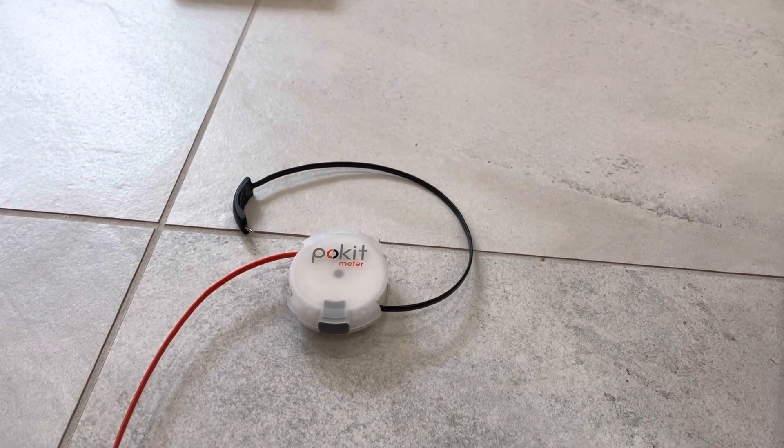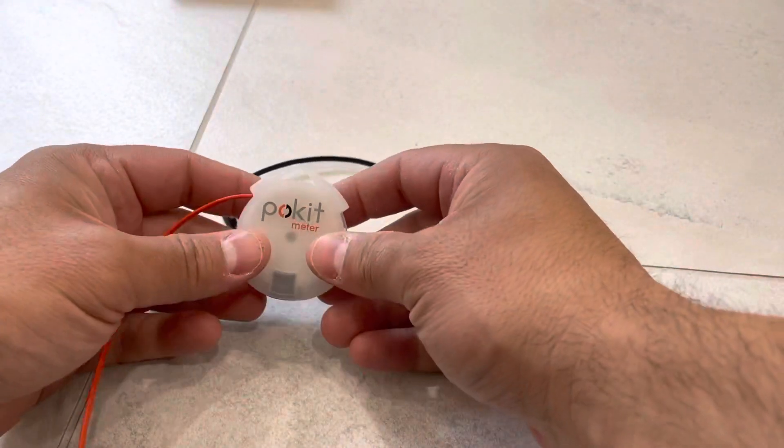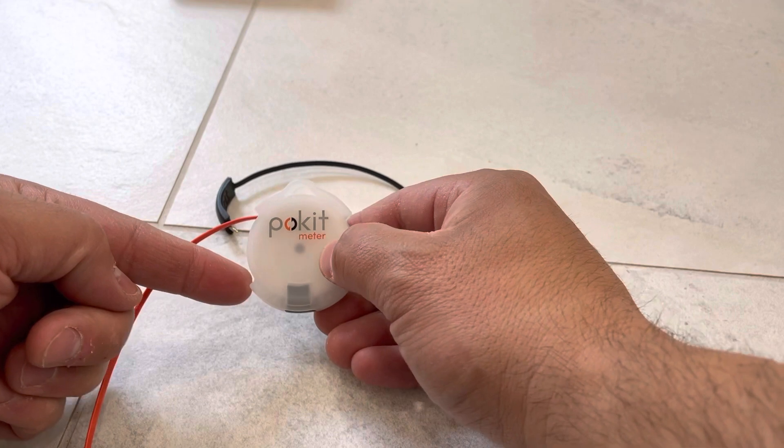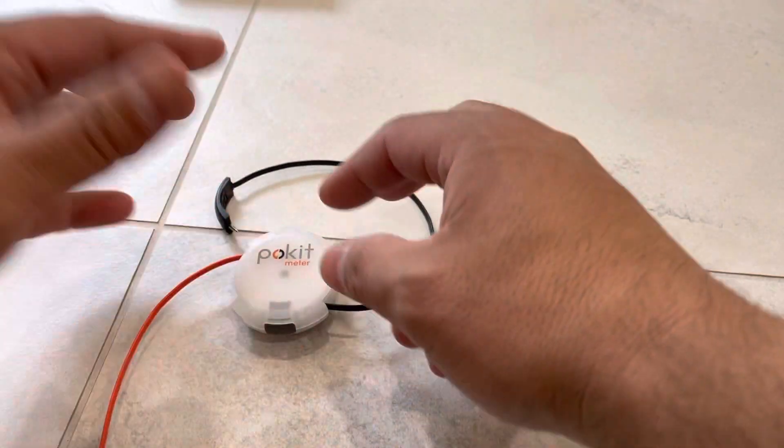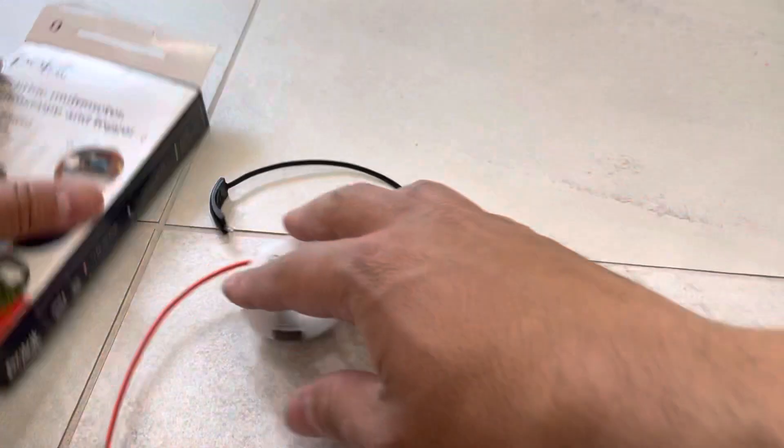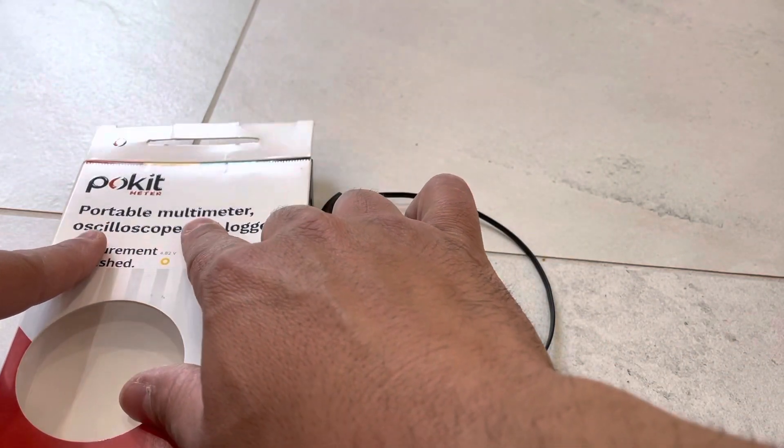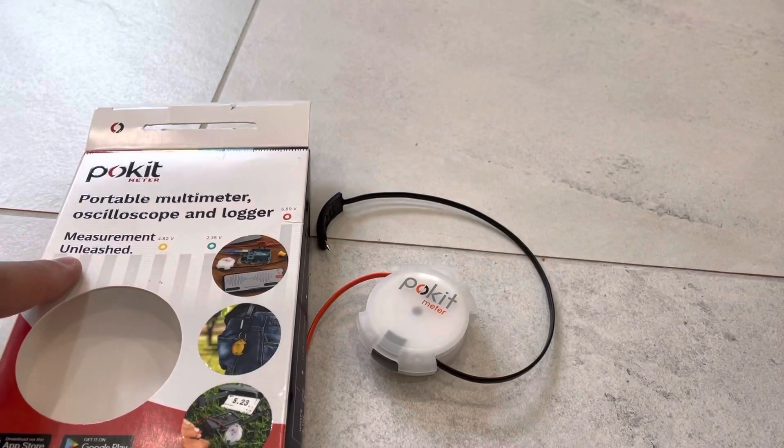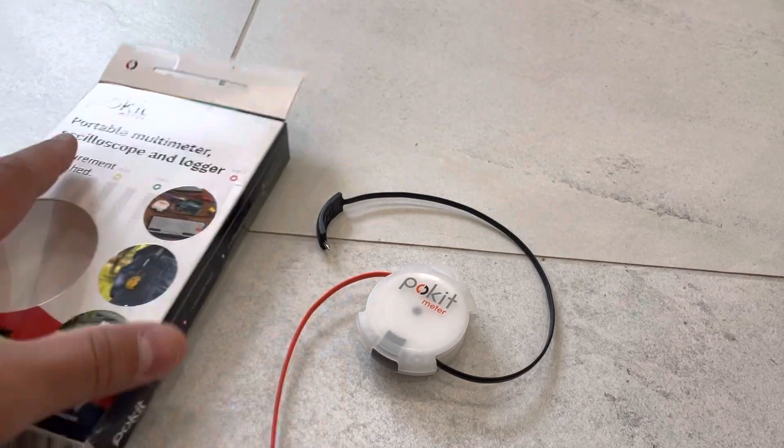Hey everybody, I'm here today to do a review of this right here. This is actually called the Pocket Meter, and in this video review I'll be going over the features and functions of the Pocket Meter with you. This is the box that it came in, and as you can see right here it is actually a portable multimeter, oscilloscope, and logger. It says measurement unleashed, and that's truly what they mean.